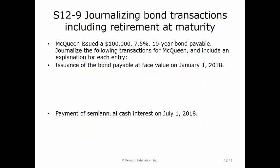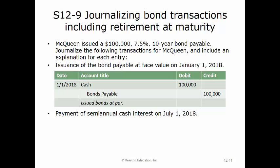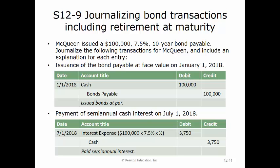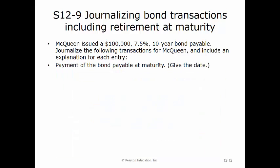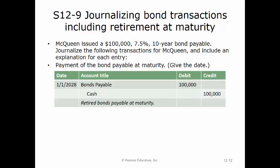McQueen issued a $100,000, 7.5%, ten-year bond payable. To journalize the issuance on January 1st, 2018, we debit cash and credit bonds payable for $100,000. To record the semi-annual cash interest on July 1st, 2018, we debit interest expense and credit cash for $3,750, equal to $100,000 times 7.5% times one-half. At maturity, we debit bonds payable and credit cash for $100,000.